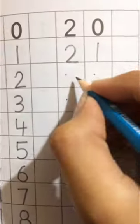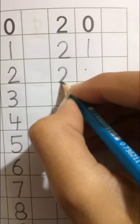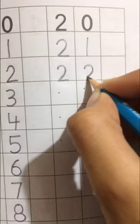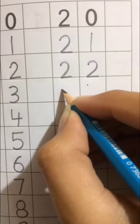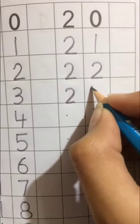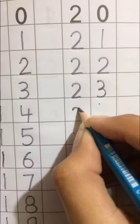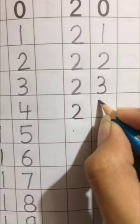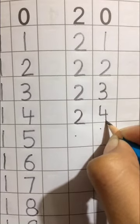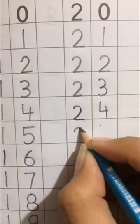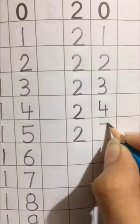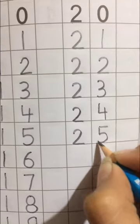21 ke baad kya aata hai? 22. So, 2, 2 kya ban gaya? 22. And then, 2, 3 kya ban gaya? 23. Then, 2, 4 kya ban gaya? 24. 24 ke baad kya hai? 25. So, 2, 5 kya ban gaya? 25.